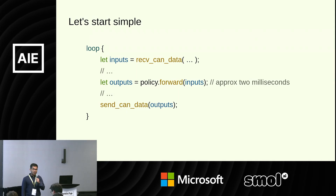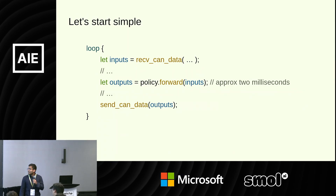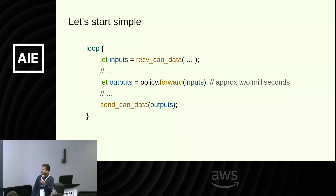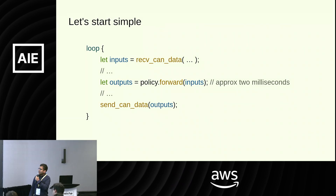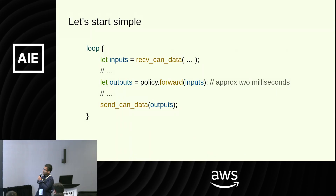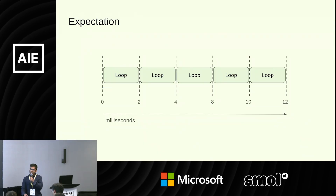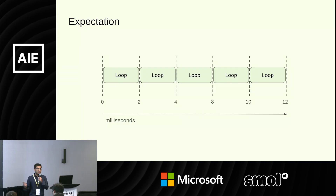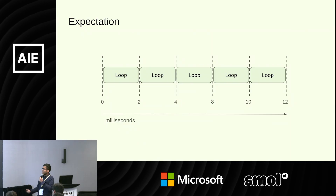Let's also start simple with the code. We'll start with receiving the data, giving that to the policy, and basically sending it back out — nothing fancy. Let's assume that we have approximately two milliseconds for our policy. This is what we should expect to see: our loop running every two milliseconds, we see our policy output, we read data, we send it out.